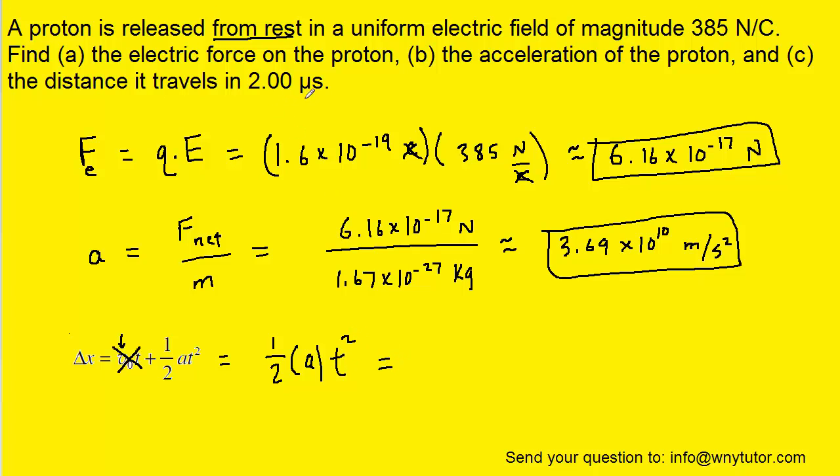So we can just plug in the known values. Notice that the time was given in microseconds, so we'll have to convert that to seconds by multiplying by 10 to the minus 6. And we get approximately 7.38 times 10 to the minus 2, and the unit would be meters since we're calculating a distance.